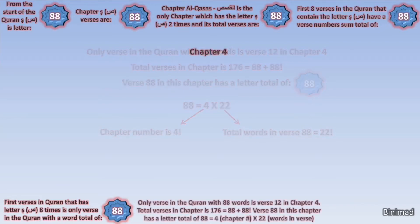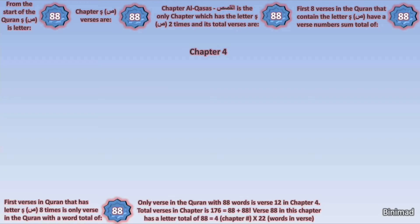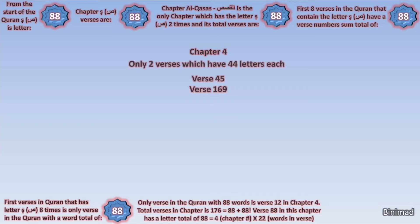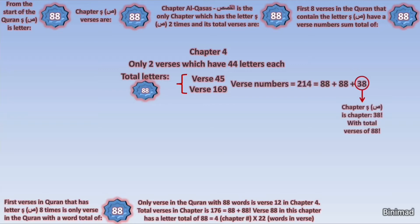Before leaving chapter 4, we notice something else. In the entire chapter there are only two verses which contain exactly 44 letters, and they are verse 45 and verse 169. When we add their letters they give us 88. This is supported when we notice that the total sum for the number of these two verses is 214, which equals 88 plus 88 plus 38, and 38 is the number of chapter Saad — with its title being the letter Saad itself and total verses 88.